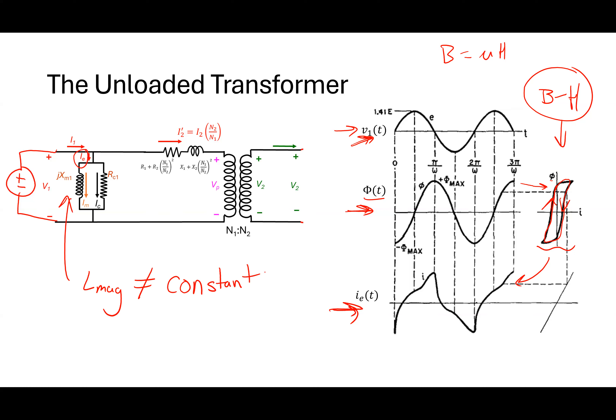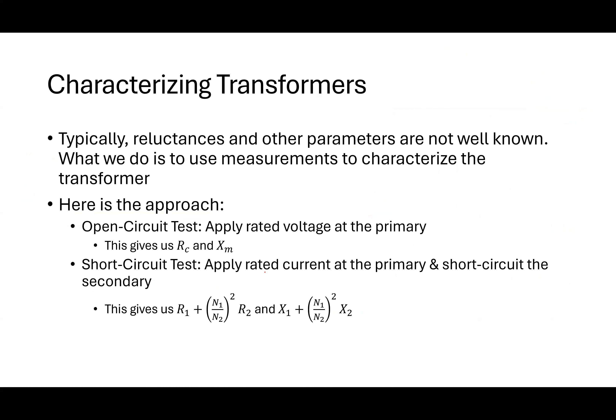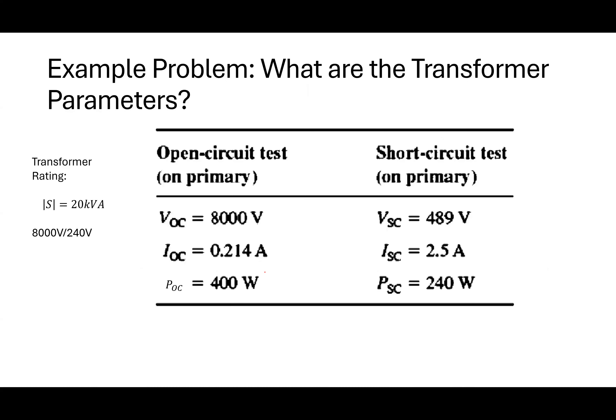In practice, nobody knows all the transformer parameters. What engineers do is perform two tests: an open circuit test and a short circuit test. In the open circuit test, I apply the rated voltage on the primary to figure out the core parameters. Then I apply rated current with the secondary short-circuited to figure out the leakage parameters. This transformer is rated for 20 kVA. The rated apparent power and voltage ratings — 8000 volts primary, 240 volts secondary — let me calculate the rated current.